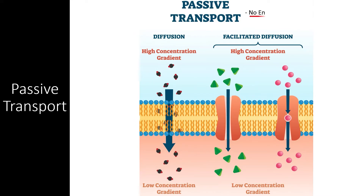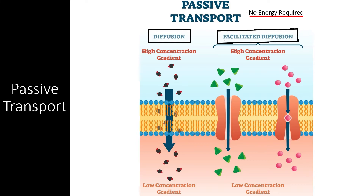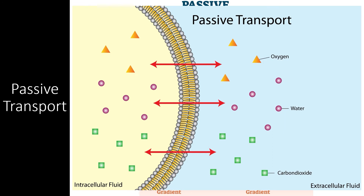Passive transport does not require energy simply because molecules are moving in the direction they would be moving anyway — from high to low. There are two basic types of passive transport: simple diffusion and facilitated diffusion. Some molecules, like oxygen, water, and carbon dioxide, are small enough that they can pass right through the plasma membrane. Oxygen and carbon dioxide are nonpolar, uncharged molecules, meaning the hydrophobic core of the lipid bilayer does not effectively block them from passing through.